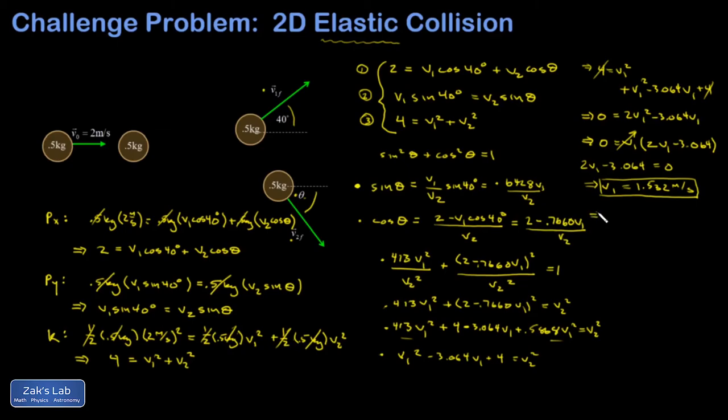So then I head back into my old equations and find the rest of the variables. I'm going to go back to equation 3 to find v2, and it's going to be the square root of 4 minus v1 squared, which is the square root of 4 minus 1.532 squared, which comes out to 1.286 meters per second.